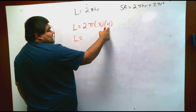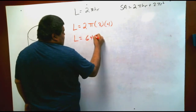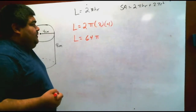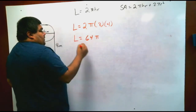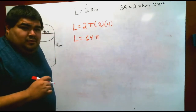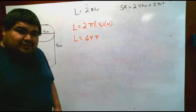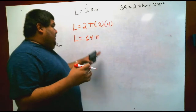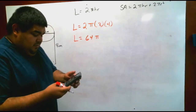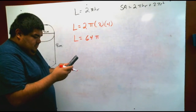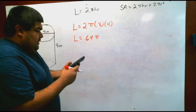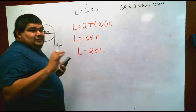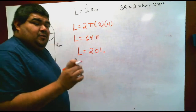For lateral area: lateral equals 2 pi times height 8 times radius 4. I multiply 2 times 4, which is 8, times 8 is 64. So lateral area equals 64 pi. Multiplying 64 by pi gives 201.06, and since the 6 rounds up the previous digit, lateral area equals 201.1 centimeters squared.